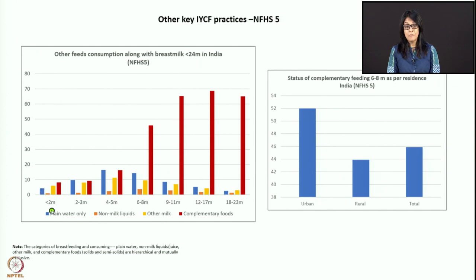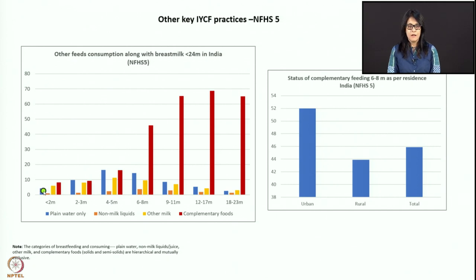Many babies are getting other feeds: plain water — about 4 to 5 percent of babies under two months — non-milk liquids such as honey or tea, other milks such as cow's milk or formula, and even complementary food by less than two months of age. You don't want any of this because there is a high risk of infection and children will not grow well. As the child grows older, plain water intake increases, complementary feeding rate increases, and other milk intake also increases.